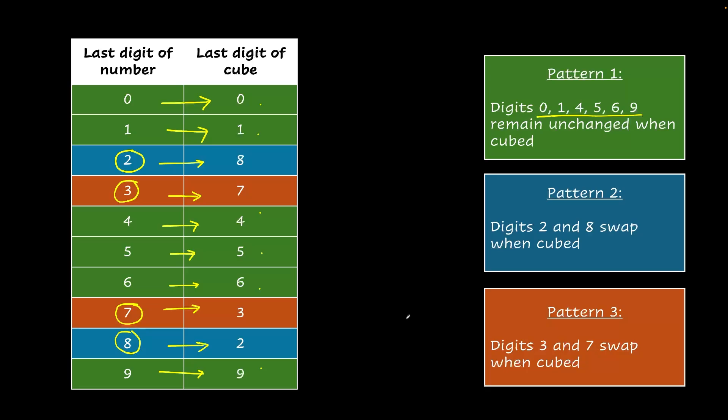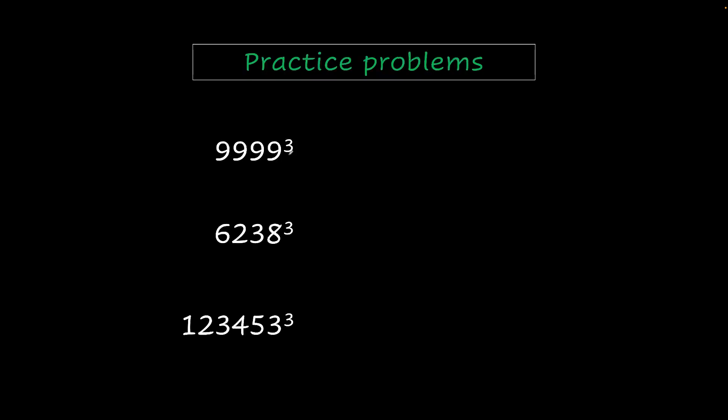Let's use this new knowledge to solve some problems very easily. So let's first try 9999 cube. But do we really need to think about these other digits? No, because we only need to worry about the 9 which is 9 cube. 9 cube is you could remember the 9 cube is 729 but from pattern 1 we know that digits 0, 1, 4, 5, 6 and 9 don't change. So 9 remains as 9. So the last digit or the unit's digit of this number will be 9.